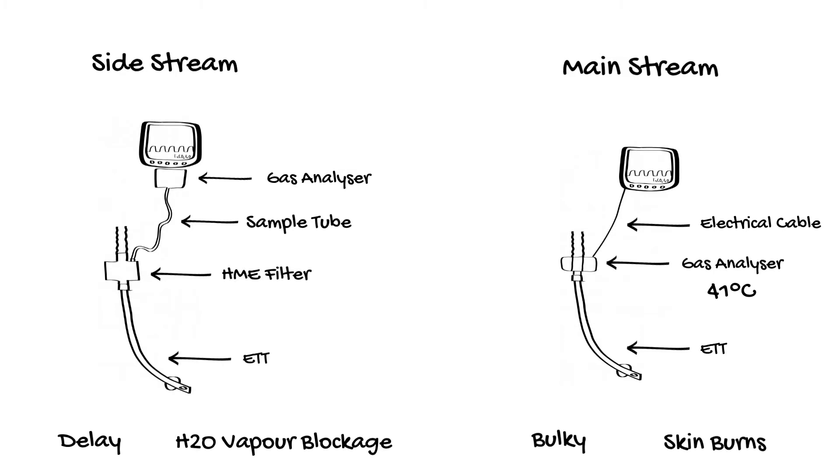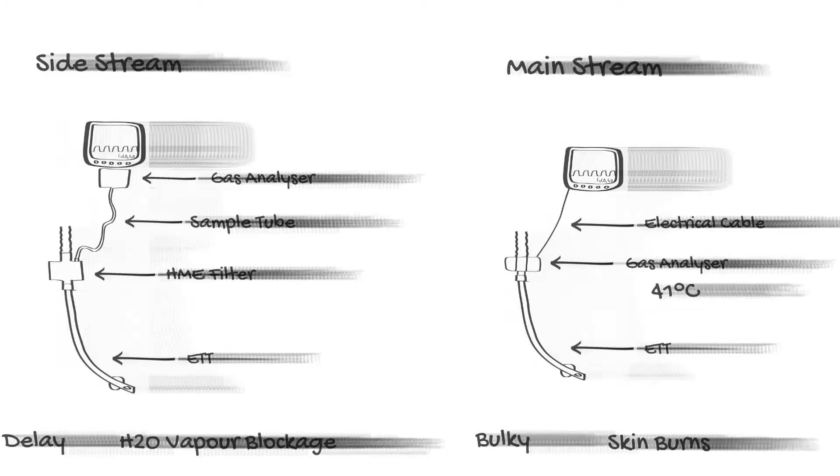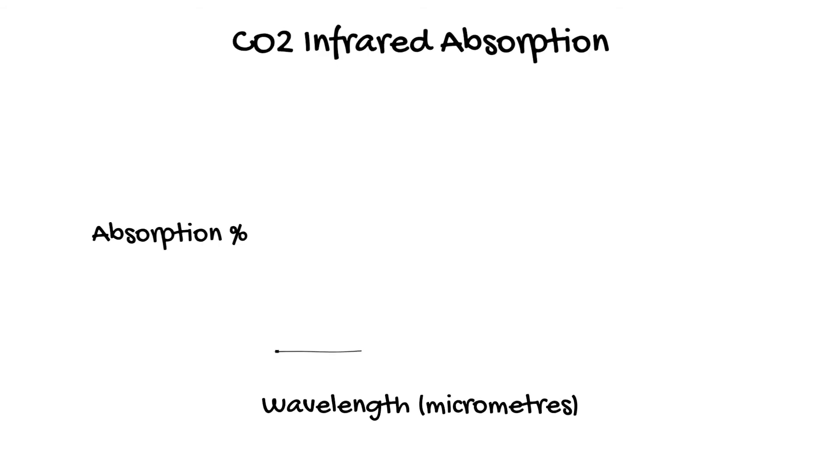Regardless of the sampling method, the gas analyser itself is basically the same. It relies on the principle that molecules with two or more types of atoms absorb infrared light at characteristic wavelengths. Carbon dioxide absorbs infrared light with a wavelength of 4.26 micrometres.